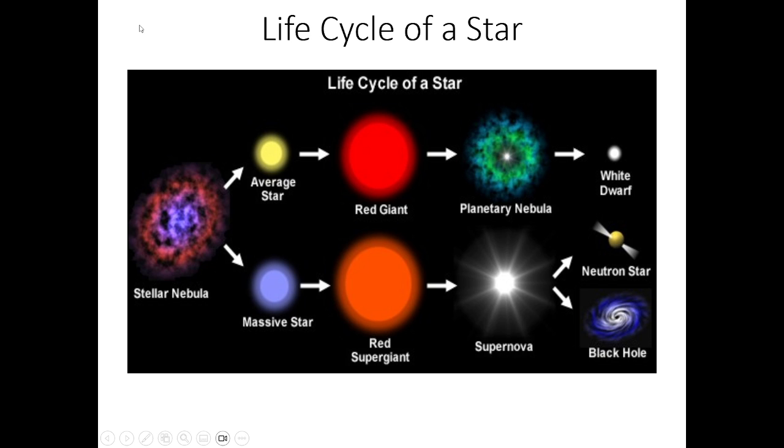So first we're going to start off with the life cycle of a star. Stars like our sun go through this life cycle right here, the top one, where it goes from an average star to a red giant to a planetary nebula, where it sheds off all of the star stuff and becomes a white dwarf.